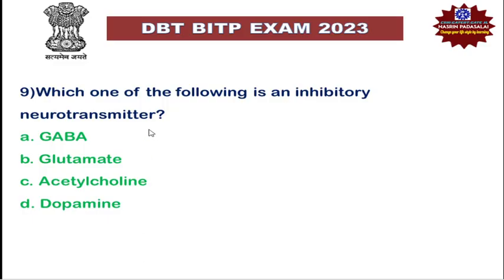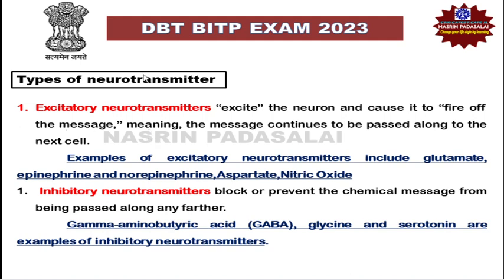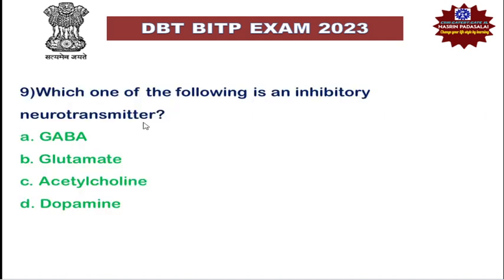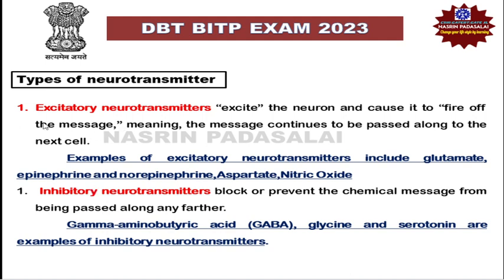Next: which one of the following is an inhibitory neurotransmitter? Neurotransmitters are classified into excitatory and inhibitory. Examples of excitatory neurotransmitters include glutamate, epinephrine, norepinephrine, aspartate, and nitric oxide. Examples of inhibitory neurotransmitters include GABA (gamma-aminobutyric acid), glycine, and serotonin. The correct answer is GABA, because glutamate is excitatory, and acetylcholine and dopamine have roles in both excitatory and inhibitory neurotransmission.